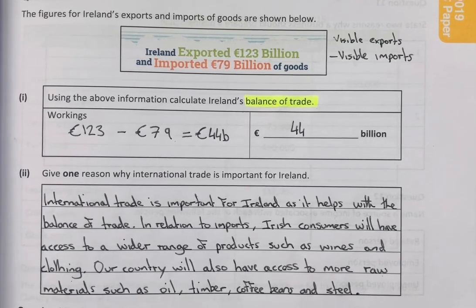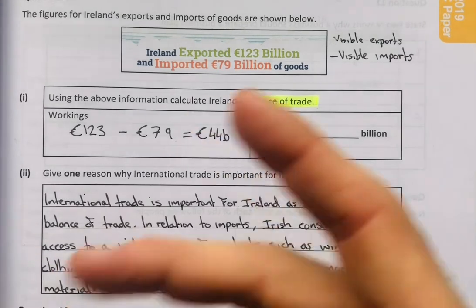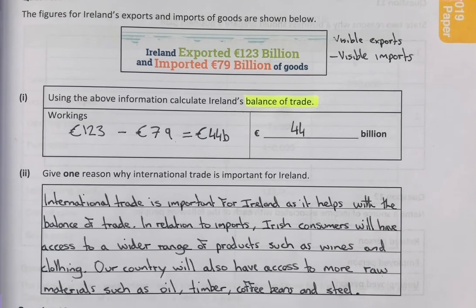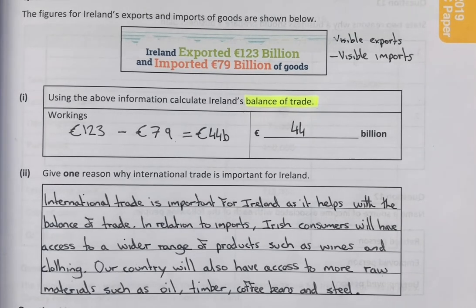To go into a little bit more depth — it helps with the balance of trade. If we were always exporting our goods, that would mean a whole load of money coming into our country. On the flip side, if we were just importing goods all of the time, that would be money leaving our country all of the time. So when we are both exporting and importing, we end up with somewhat of a balance, and that's what's known as the balance of trade. So international trade helps with this balance of trade.